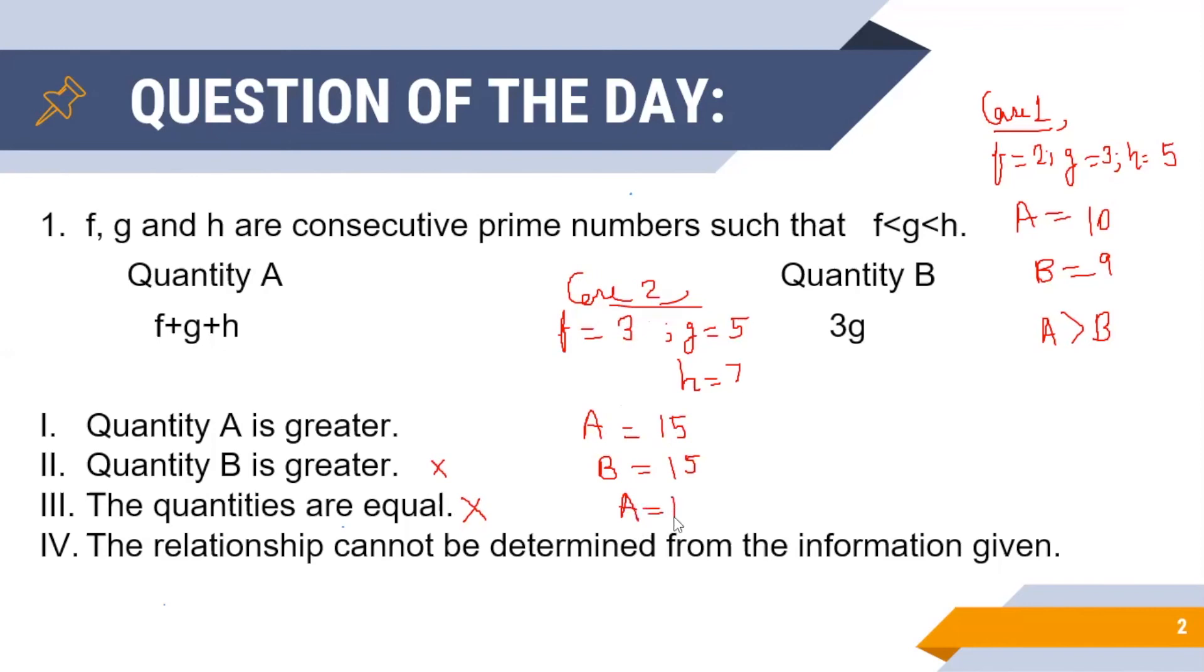Thus we see that option 1, that is A greater than B, fails for case 2. That is, at least we know there is one case wherein A is not greater than B and hence we can successfully eliminate option 1 as well to give us the final answer as option 4.